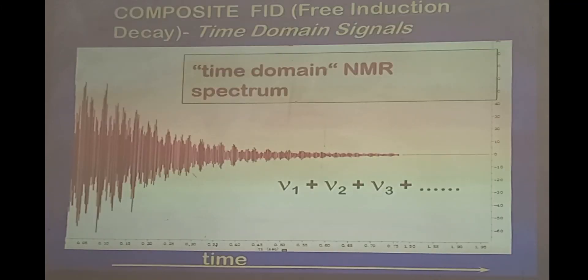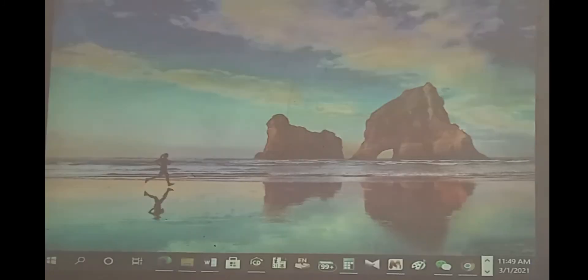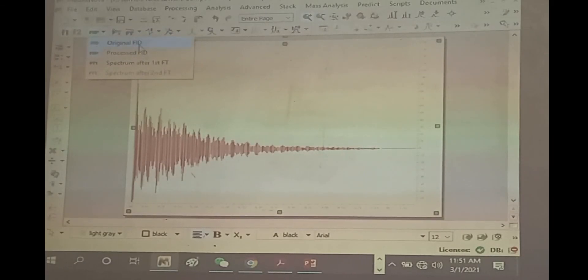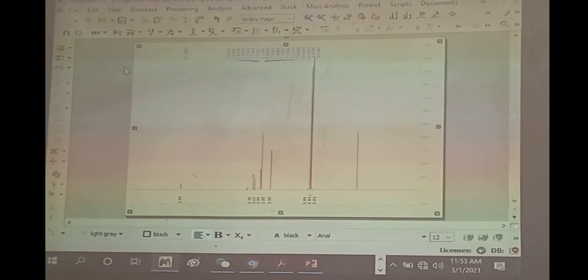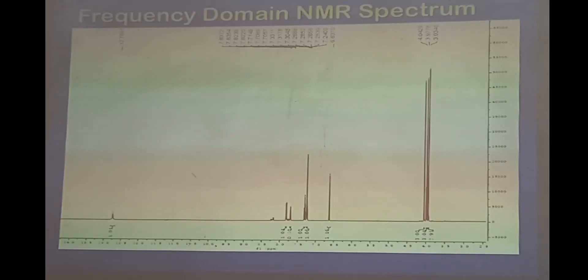Fourier transform converts the complex FID into separate frequencies and then converts it into this frequency domain spectrum. There are different softwares through which you can work with your spectrum — you can see the original FID, processed FID, and then the spectrum after the first Fourier transform. Tomorrow we will talk about the signal-to-noise ratio. This was all about FID and Fourier transformation and how it helps in finding the different frequencies.